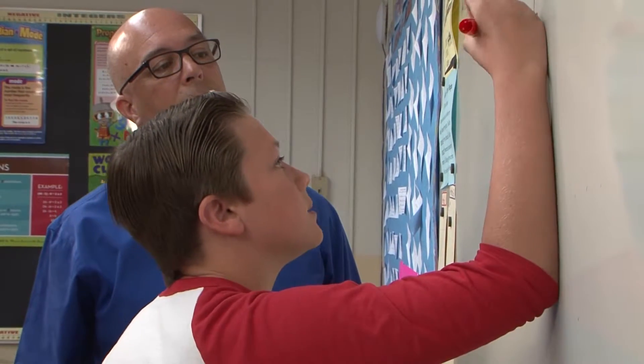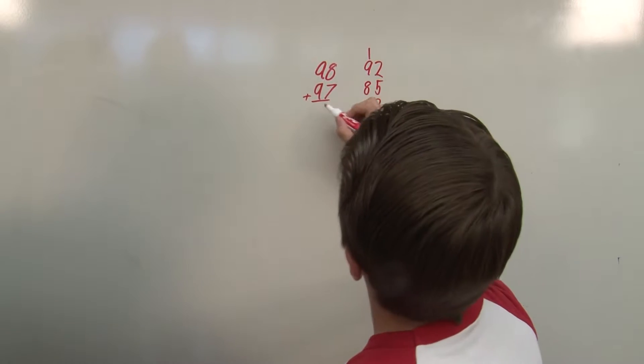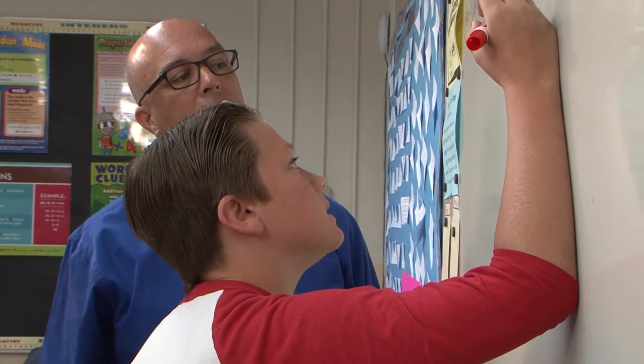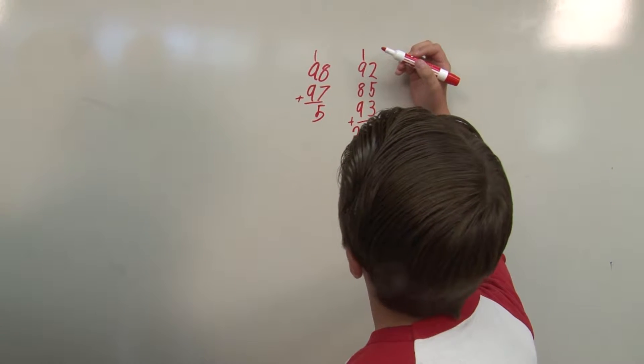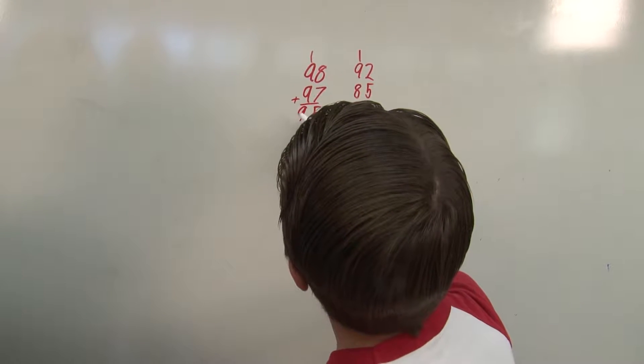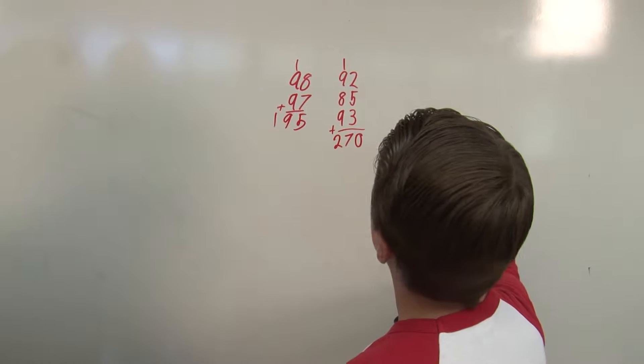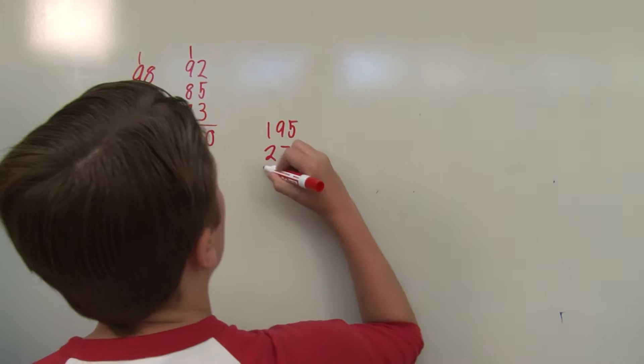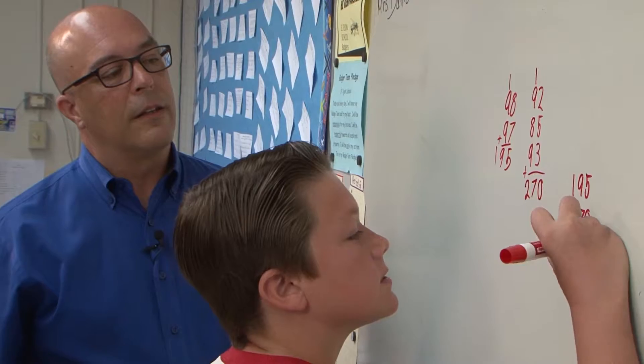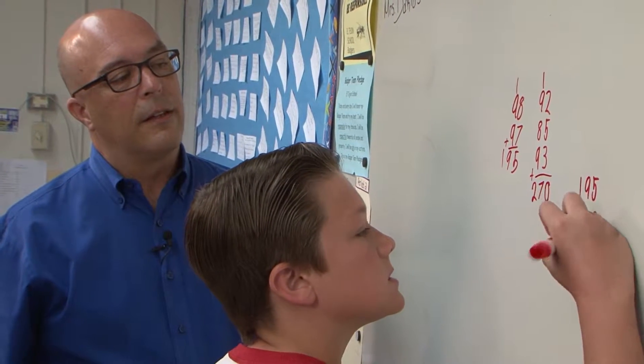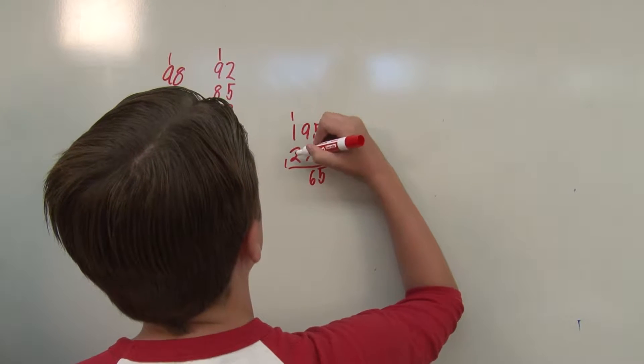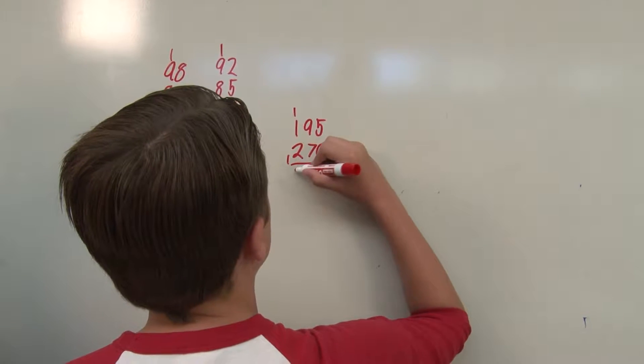And then 8 plus 7 would be 15. Carry the 1. 18. 9 plus 9 is 18, plus the 1 is 19. Okay. 195, plus 270. 5 plus 0 is 5. 9 plus 7 is 16. 2, 2 plus 2 is 4.